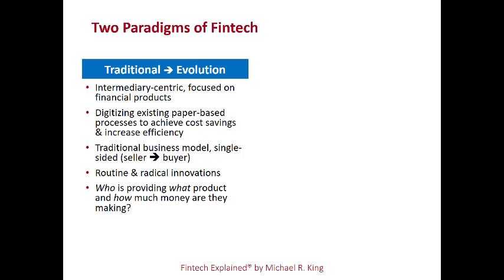In this traditional paradigm, the financial system is focused on selling products such as loans, deposits, mortgages, credit cards, investment products, and capital markets products to either retail or institutional investors. The new wave of investment has simply been to digitize existing paper-based processes as a way to achieve cost savings and increase efficiency for these financial incumbents. The business model has not changed — it remains a single-sided business model with a seller on one side and a buyer on the other side. The type of innovations would be described as routine or radical, and the question incumbents ask is: who is providing what product and how much money are they making?